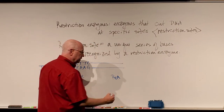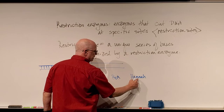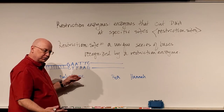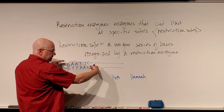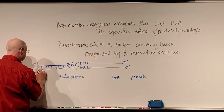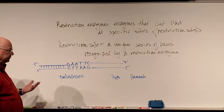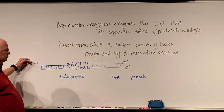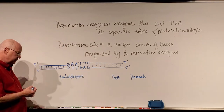Palindromes are a series of letters, or in the case of DNA, a series of bases on two DNA strands that read the exact same in opposite directions. Remember, one strand goes five-prime to three-prime, the other strand goes five-prime to three-prime in the opposite direction — we call this anti-parallel. DNA is a double helix; one strand is read from the five-prime OH group on the sugar-phosphate backbone to the three-prime OH group.